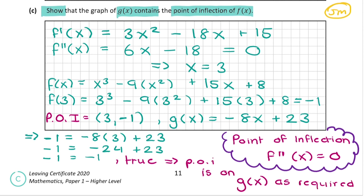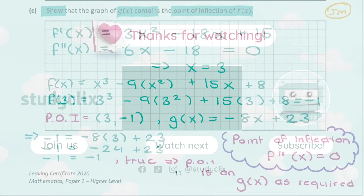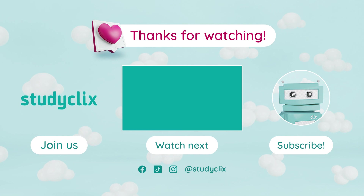Since the equation is satisfied, that implies the point of inflection is on g(x), as required. Key piece of information was knowing what a point of inflection is — that was five marks. That's the end of this question. I hope you found this helpful and I look forward to seeing you at the next one. Bye!